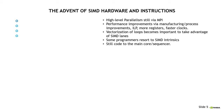Then SIMD hardware came along, like SSE registers and AVX registers. How did we adjust? We still used high-level parallelism via MPI — a great model that survived many years. Most performance improvements still came via manufacturing process improvements. Instruction-level parallelism got even higher, there were more registers, and clocks were still faster. SIMD vectorization of loops became important, and compilers — including the old PGI compiler — really invested a lot of time into vectorizing loops across SIMD lanes. The compilers weren't perfect, and some programs resorted to SIMD intrinsics. But you still coded to the main core.